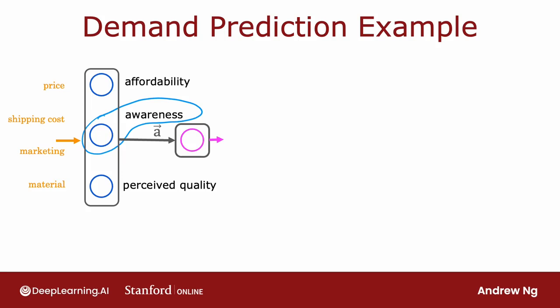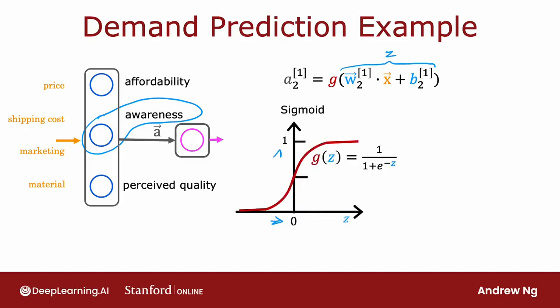So rather than modeling awareness as a binary number, zero or one, that you try to estimate the probability of awareness, or rather than modeling awareness as just a number between zero and one, maybe awareness should be any non-negative number, because there can be any non-negative value of awareness going from zero up to very, very large numbers. So whereas previously we had used this equation to calculate the activation of that second hidden unit estimating awareness, where g was the sigmoid function and thus goes between zero and one, if you want to allow a_2^[1] to potentially take on much larger positive values, we can instead swap in a different activation function.